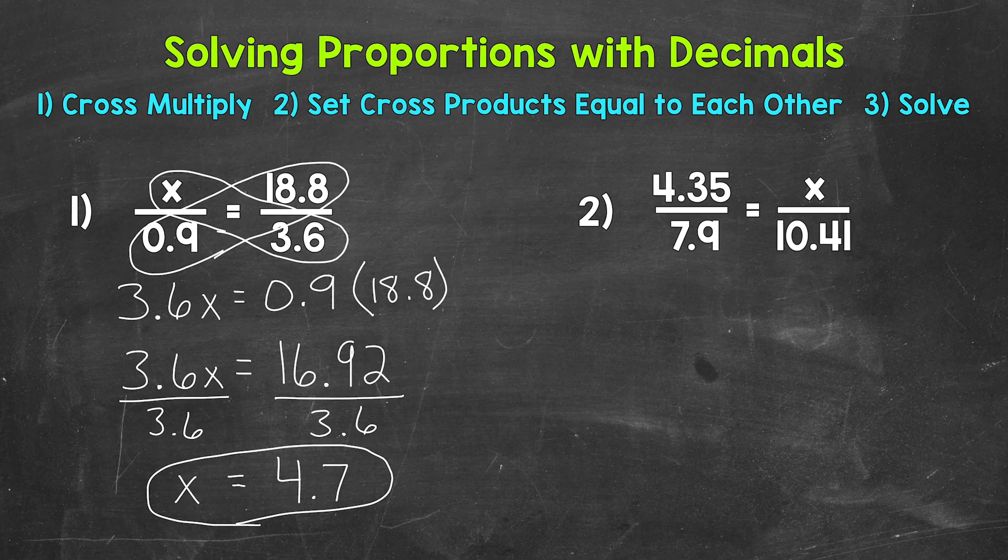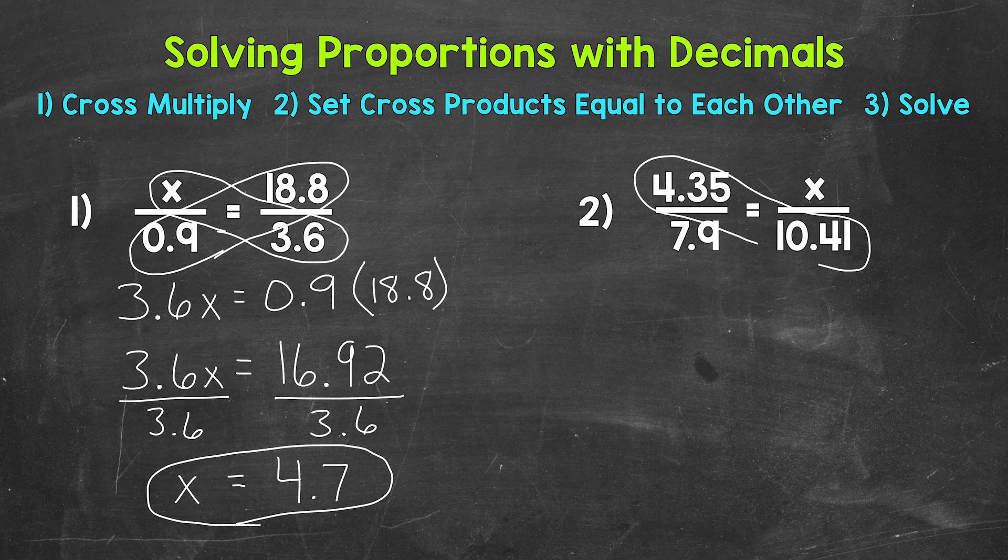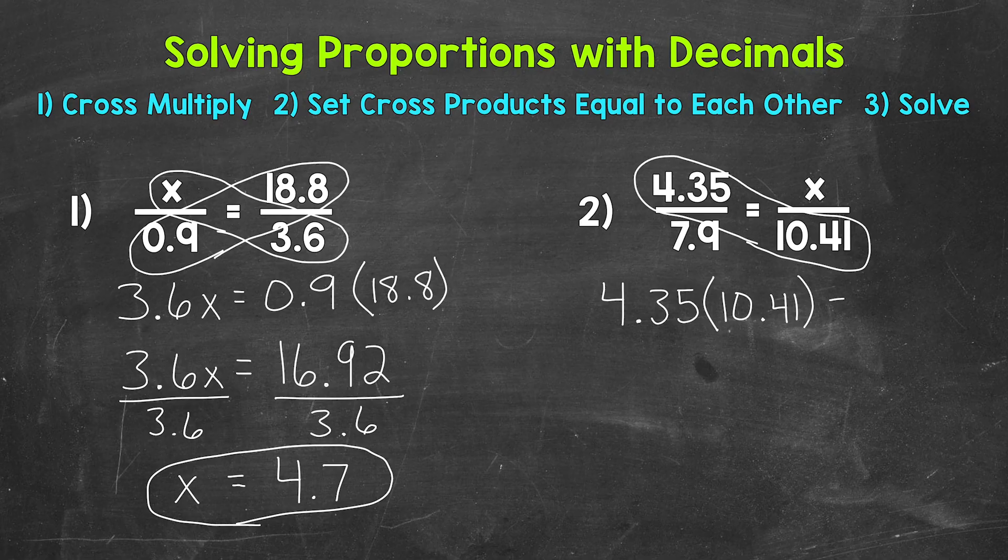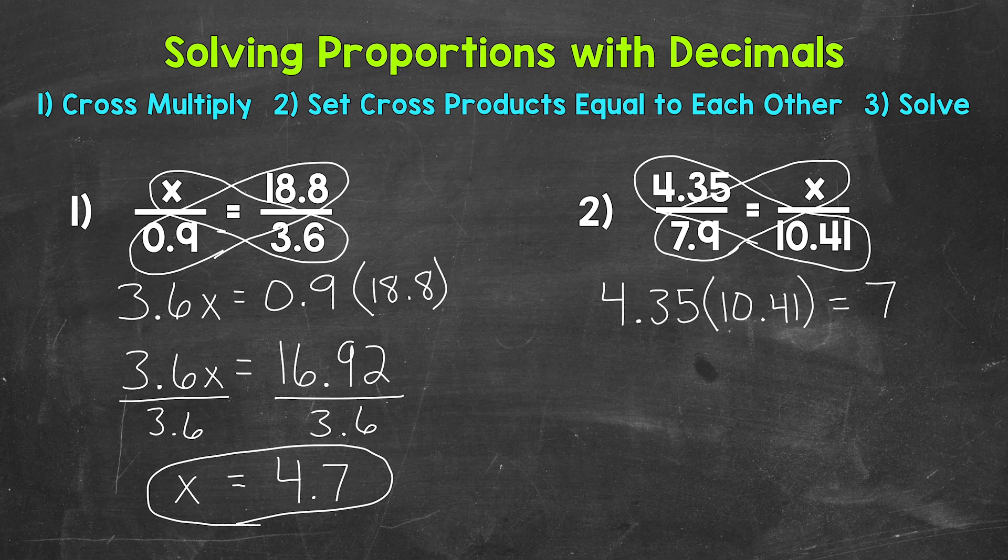Let's cross multiply. So multiply diagonally. We'll start with 4 and 35 hundredths times 10 and 41 hundredths. So 4 and 35 hundredths times 10 and 41 hundredths equals, and then we have 7 and 9 tenths times x, which we can write as 7 and 9 tenths x.